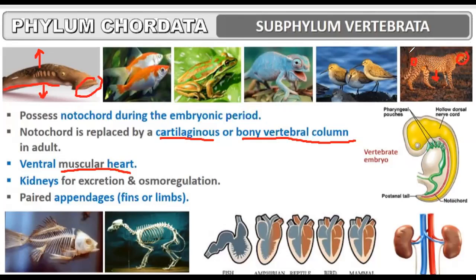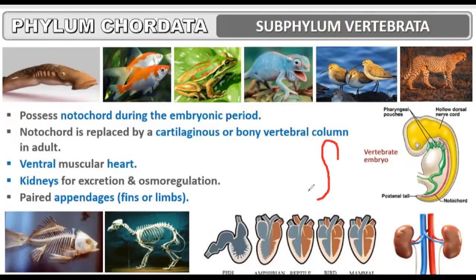If we imagine a tiger standing vertically, the side where the arms are present is the ventral side. For a human being, the side where the stomach is present is the ventral side, and the side where the vertebral column is present is the dorsal side. The face and mouth side is the anterior side.